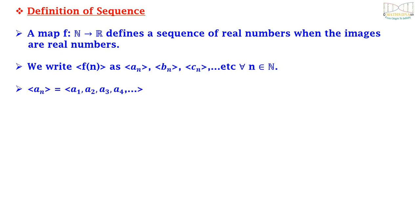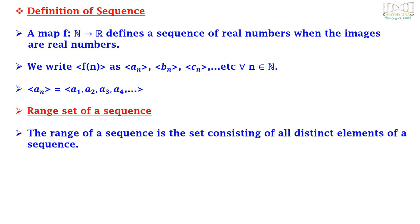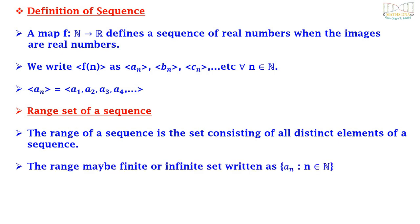Also, a_n equals {a1, a2, a3, a4, ...} where a1, a2, a3, and a4 are the terms of the sequence. The range set of a sequence is the set consisting of all distinct elements of a sequence. The range may be a finite or infinite set, written as {a_n : for all n belonging to N}.